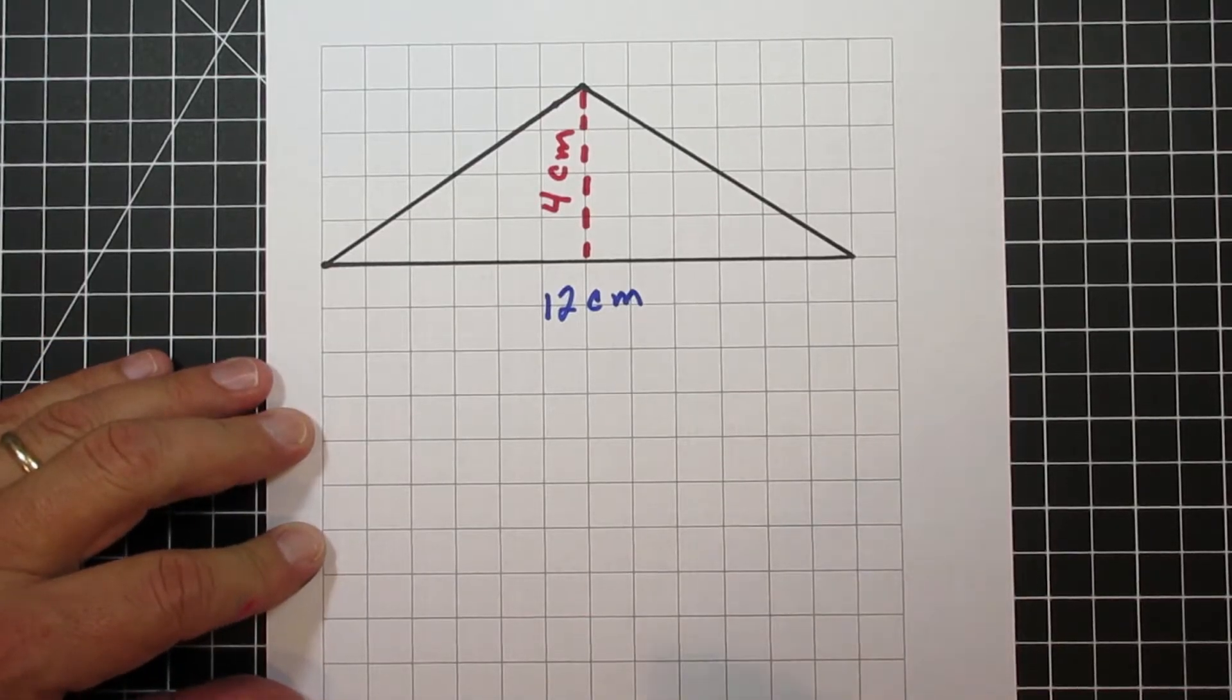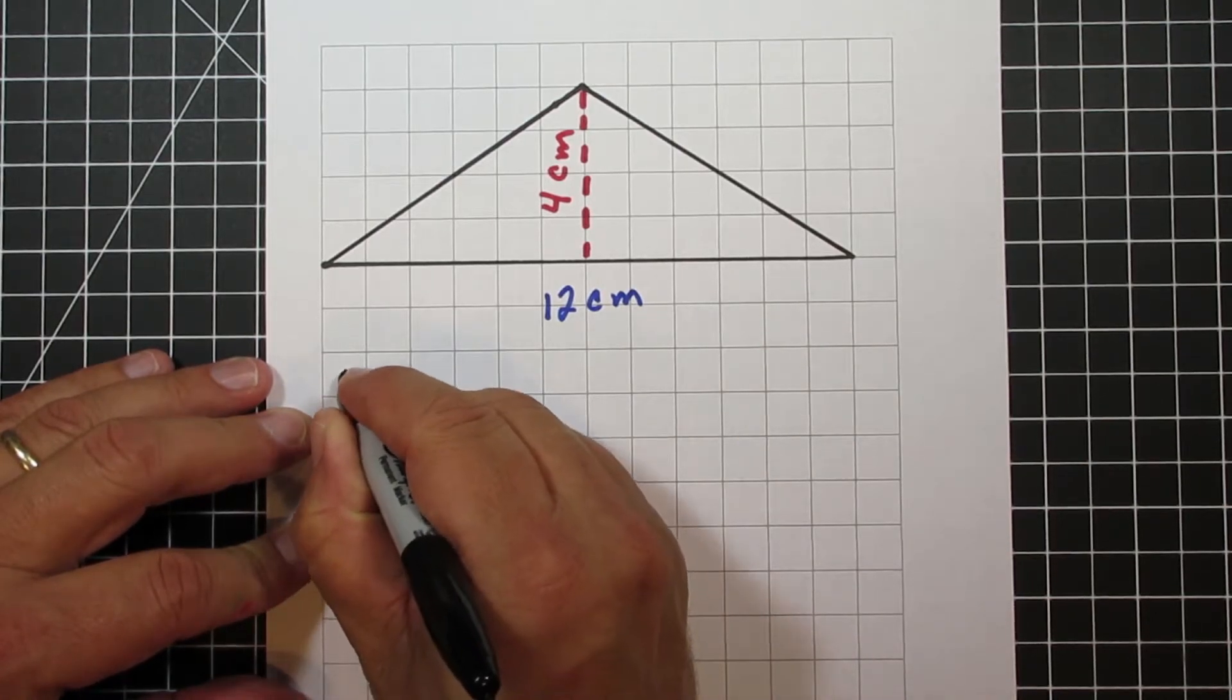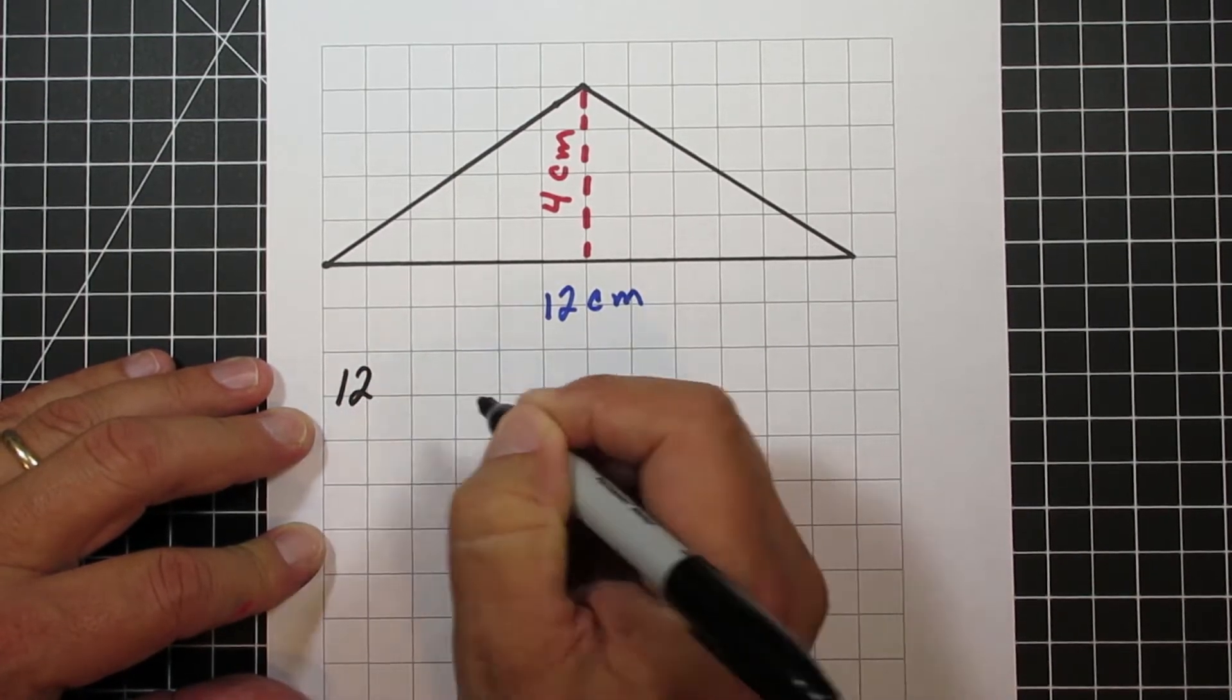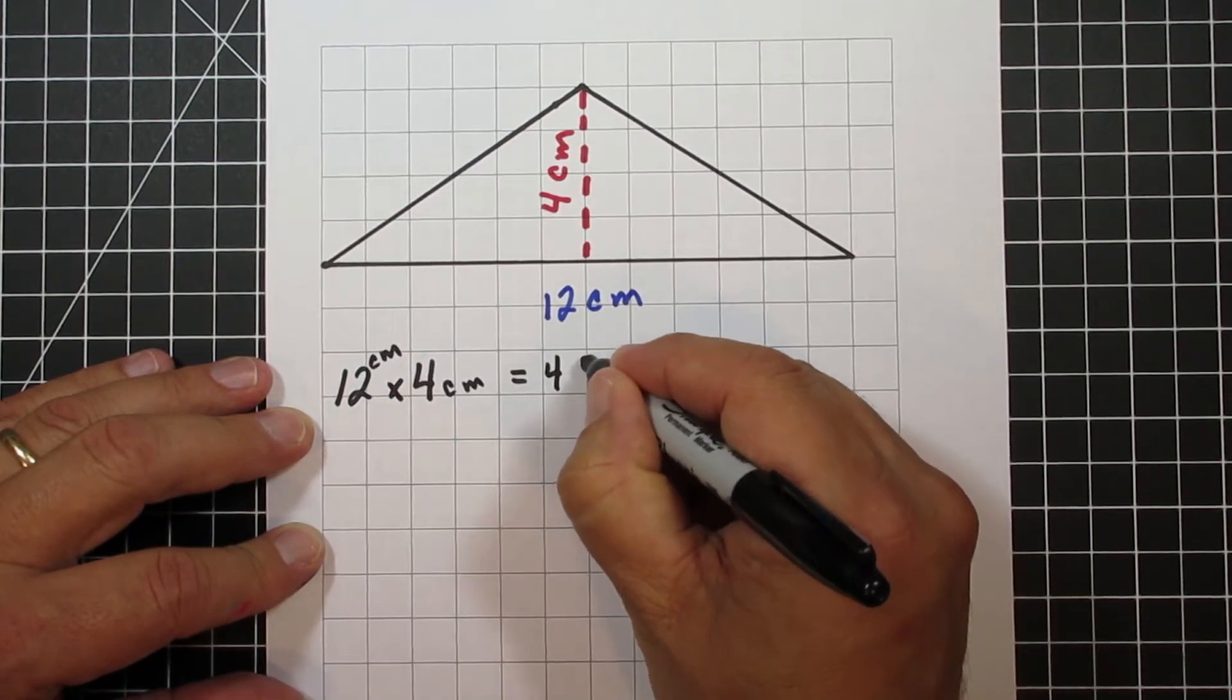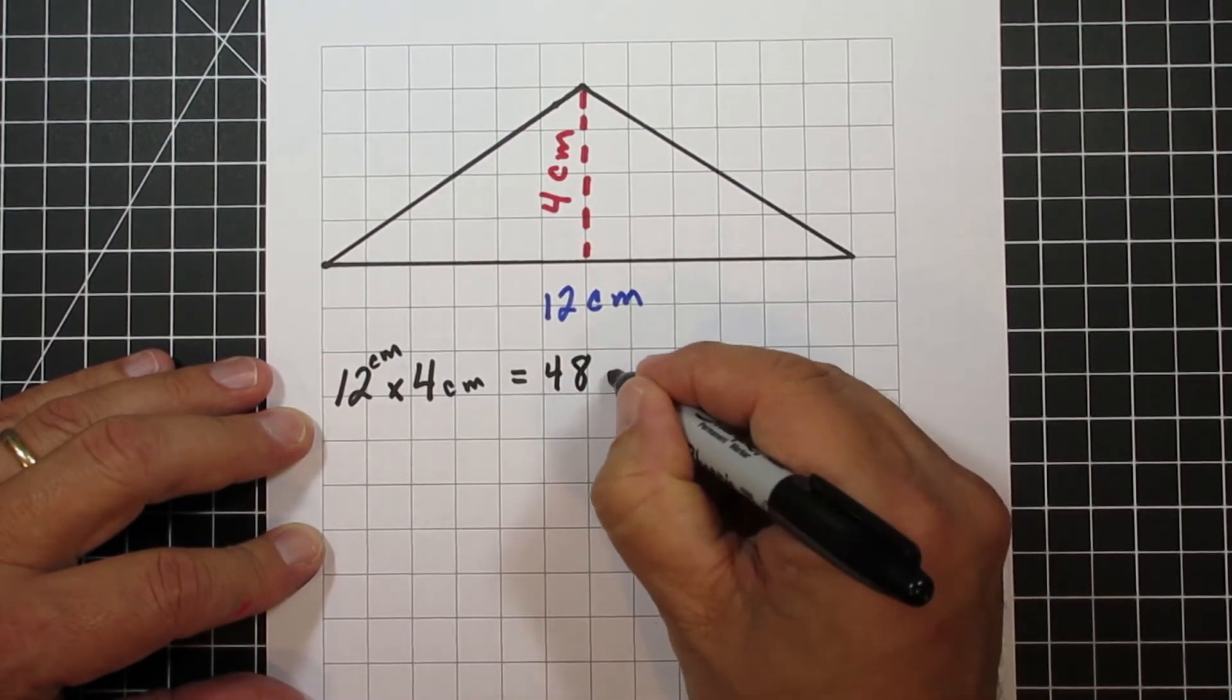Next, we have three different triangles that we're going to find the area of, and we're going to use both formulas, base times height divided by 2, and 1 half times base times height, to show you how this works.